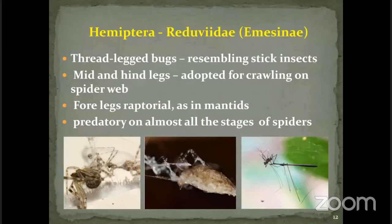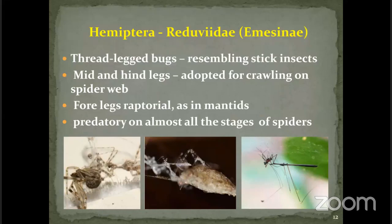In case of Hemiptera, the subfamily Emesinae are specialized predators also called thread-legged bugs. They often resemble stick insects — unless you see their raptorial legs, they look exactly like a phasmid. Their mid-legs and hind legs are modified — these are the adaptive structures for Emesinae, allowing them to crawl on spider webs without getting entangled. Their forelegs are modified like a mantid's raptorial legs for grabbing prey. They are predatory on almost all stages including eggs, juveniles, and adults of spiders.